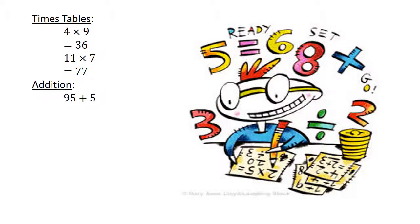Addition: 95 plus 5 equals 100. Subtraction: 73 minus 74 equals negative 1.